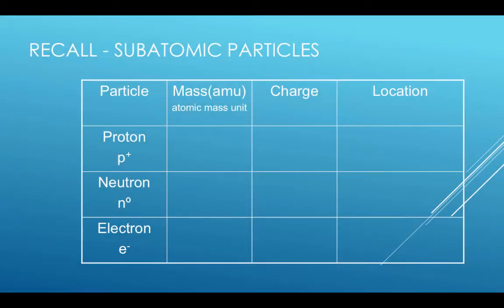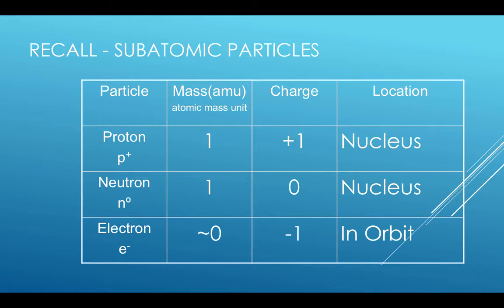We call it the subatomic particles. Protons have a mass of 1, a charge of plus 1, and reside in the nucleus. Neutrons have a mass of 1, a charge of 0, and also found in the nucleus. Electrons are almost massless, have a charge of minus 1, and travel around the nucleus in a path called orbitals.